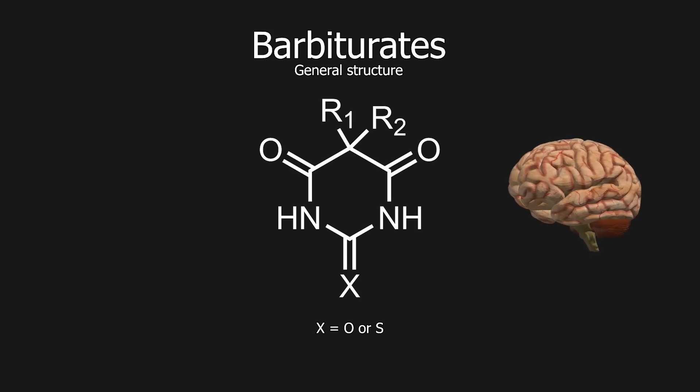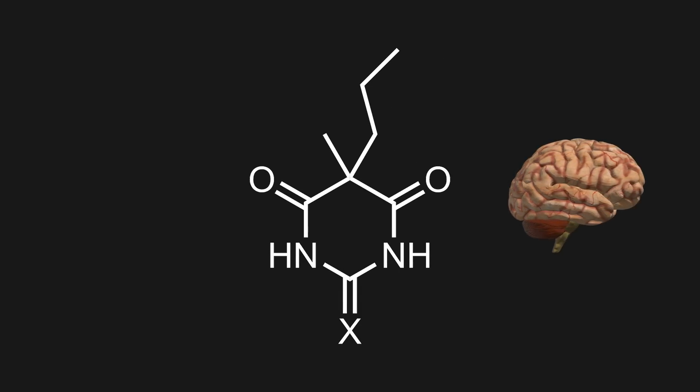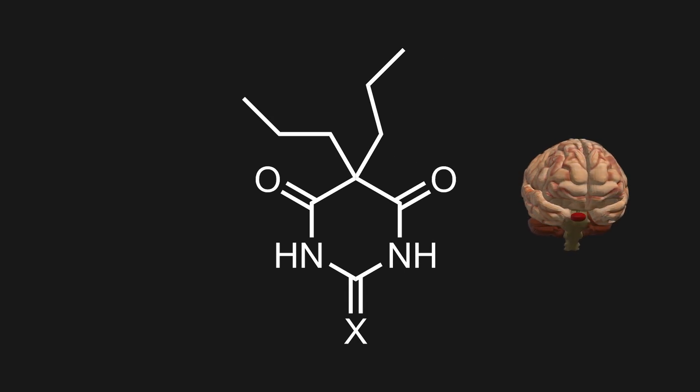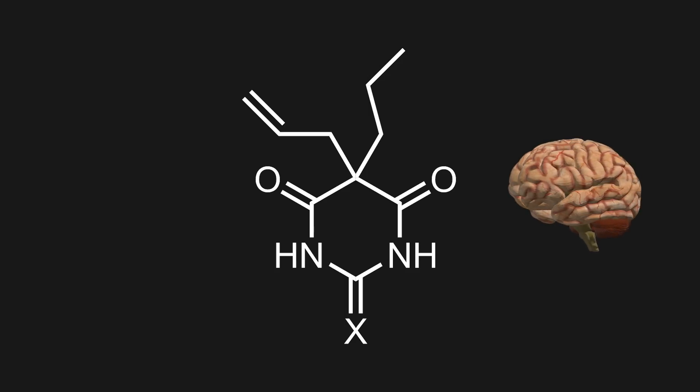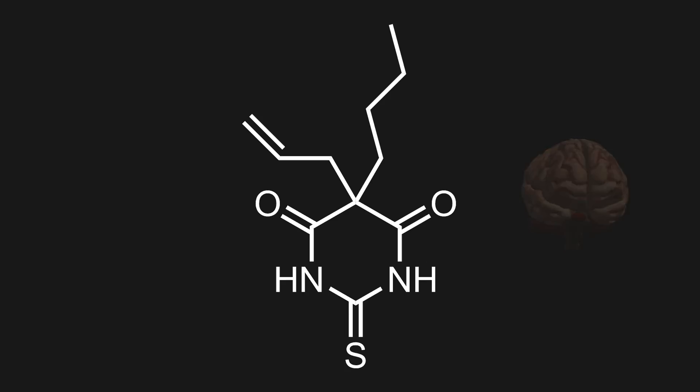Barbiturates work by affecting the brain. Considering that the brain is fatty tissue, when we change the sidechain to be more non-polar, and so lipophilic, we can potentially increase absorption and potency of the molecule. The same goes for changing the ketone to a thioketone, making it a little bit more lipophilic. But we can't change too much of this part of the molecule before it becomes a problem.